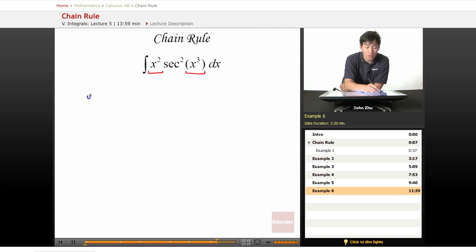So u equals x cubed, which means du equals 3x squared dx, which means dx equals 1 over 3x squared du. Here we see this 3x squared term in the denominator, which will cancel the x squared term out once we substitute. So let's go ahead and do some substitution.